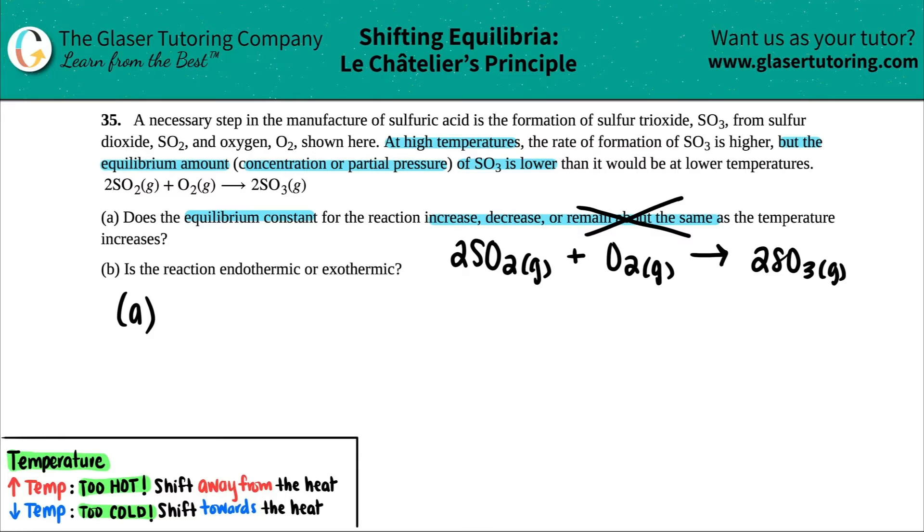So if I just quickly write out the K formula, it doesn't matter whether we're talking about KP or KC, but specifically they talked about pressure. So maybe I'll just say that we got a KP formula. So this equals the pressure of the product, which is SO3. And that's going to be raised to the second because I have a two in front of here.